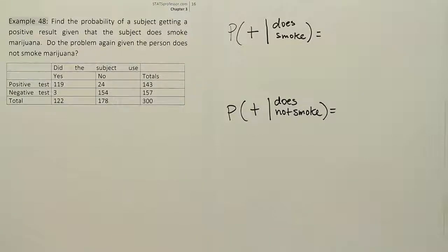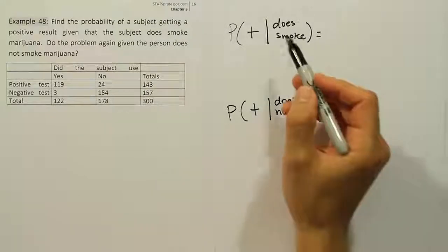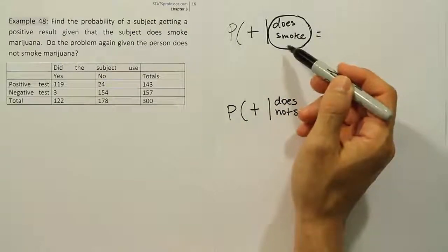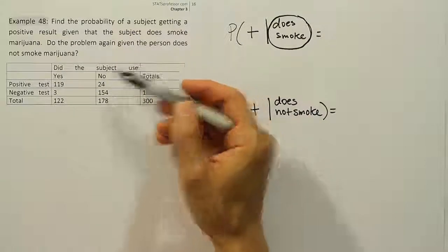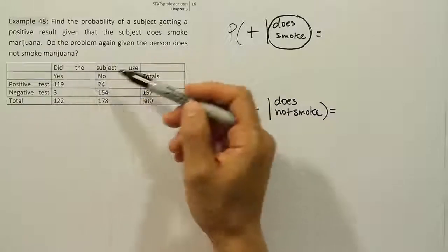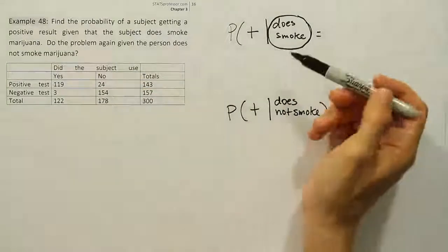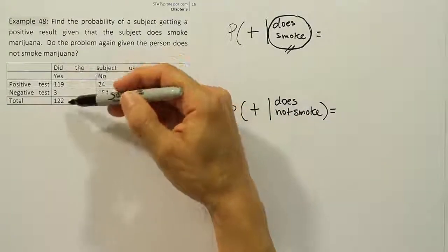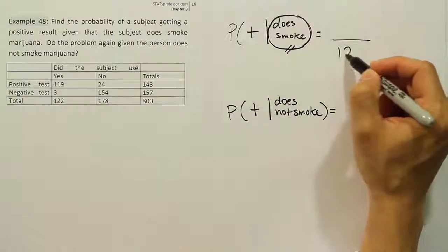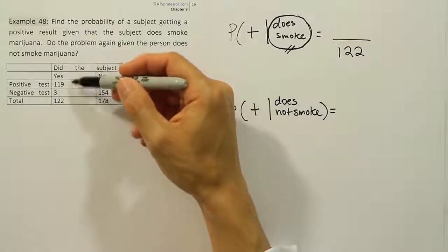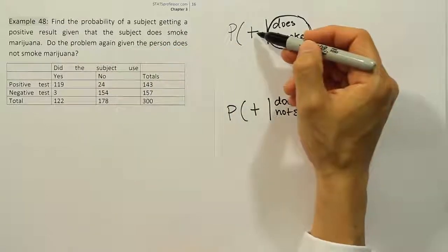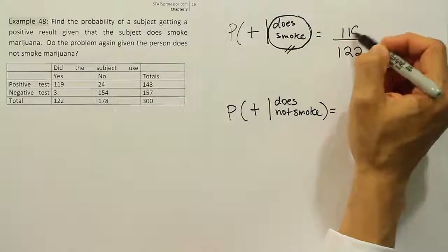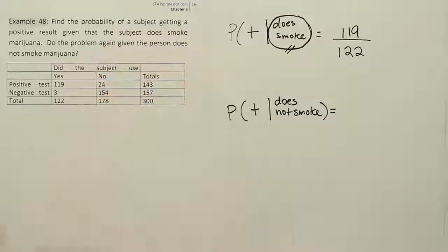Now let's take a look at the column that corresponds to does use marijuana because that's what we'll be focusing on in this part of the problem. So it says, did the subject use marijuana basically? And there's two possibilities, either yes or no. The yes column is the column we want to focus on because we're interested in the people who do smoke marijuana here for this part of the problem. So the total becomes our denominator. So we're going to write that as 122. And then we're just looking to see which of these numbers remaining becomes the numerator. Well, the number remaining should correspond to positive. So between the two numbers left over, 119 is the number that is in the positive row. So that will be the number we'll take.